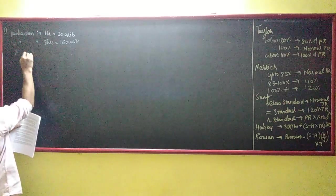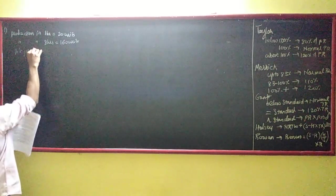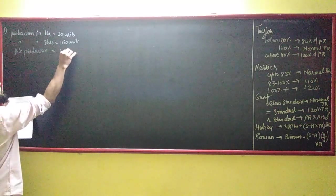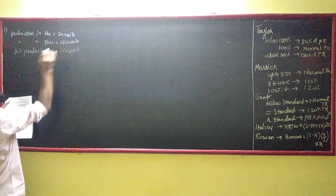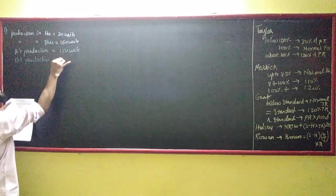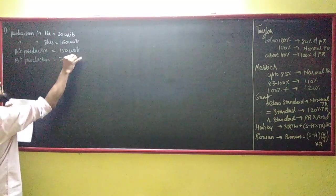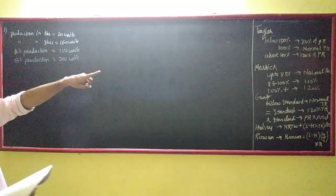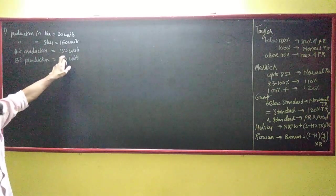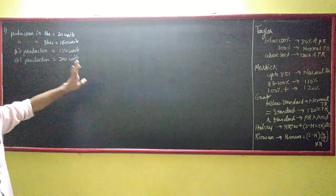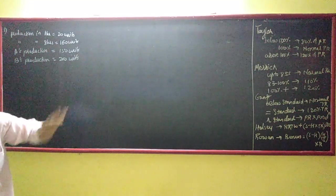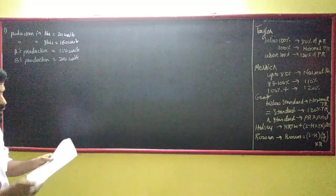Mr. A's production is 150 units and Mr. B's production is 200 units. From this you can see that Mr. A is below 100% capacity — at 80% — while Mr. B is above 100% capacity.